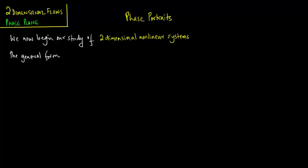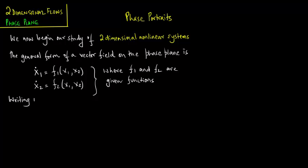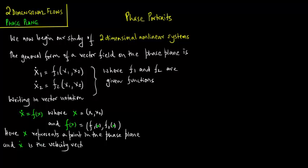The general form of a vector field on the phase plane is: x1_dot = f1(x1, x2) and x2_dot = f2(x1, x2), where f1 and f2 are given functions. Writing in vector notation, we have x_dot = f(x), where x = (x1, x2) and f(x) = (f1, f2). Here x represents a point in the phase plane and x_dot is the velocity vector at that point.